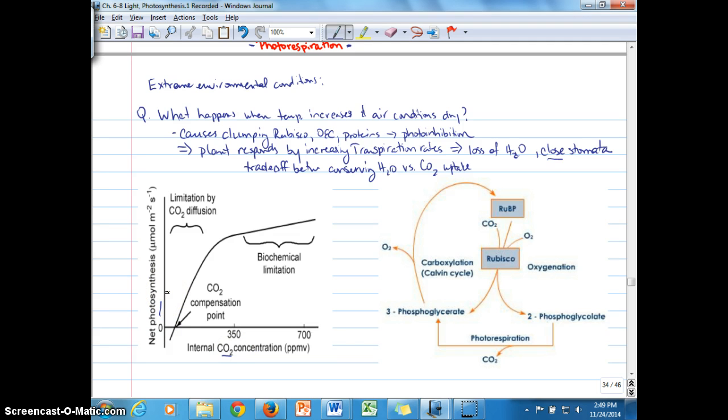It looks similar to our light response curves, where we had irradiance along the x-axis. But in this case, we're looking at the CO2 concentration in parts per million. And as CO2 concentration increases, we see that CO2 limited region of the graph, just like we saw with the light limited region of the graph, such that as CO2 concentration increases, then photosynthesis rate increases.